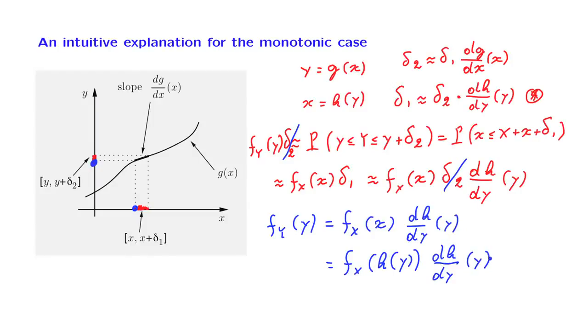And this is just the same formula as the one that we had derived earlier using CDFs. This derivation is quite intuitive. It associates probabilities of small intervals on the x-axis to probabilities of corresponding small intervals on the y-axis. These two probabilities have to be equal, and this implies a certain relation between the two PDFs.